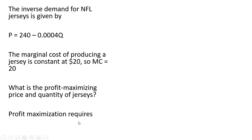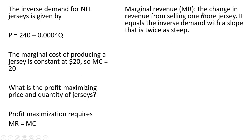Profit maximization requires producing up to the point where marginal revenue equals marginal cost — MR equals MC — where MR is the change in revenue from selling one more jersey. It's going to equal the inverse demand with a slope that is twice as steep. So here's our inverse market demand for jerseys; marginal revenue will look like that except the slope will be twice as steep.